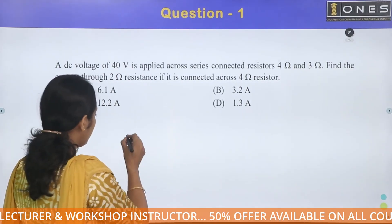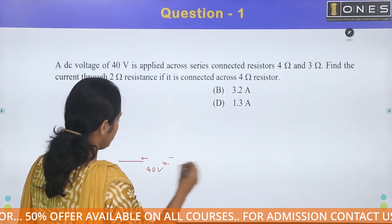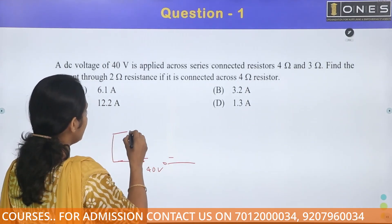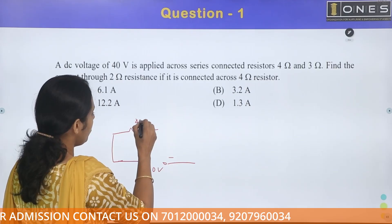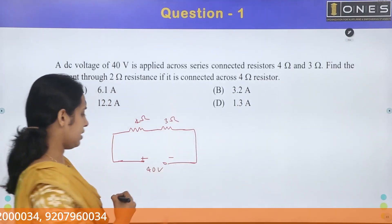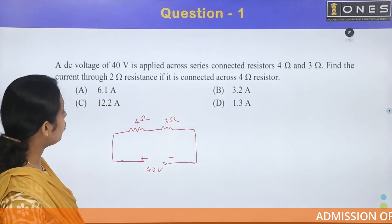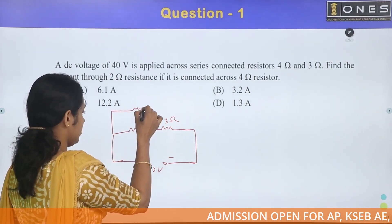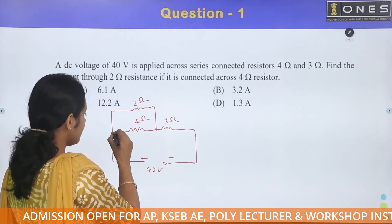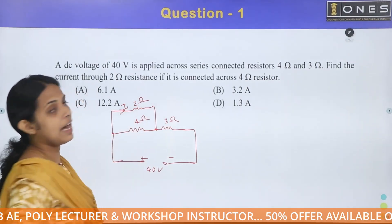We have a 40 volt DC voltage source applied across series connected resistors of 4 ohm and 3 ohm. A 2 ohm resistor is connected in parallel across the 4 ohm resistance. The current I1 through the 2 ohm resistor needs to be calculated.